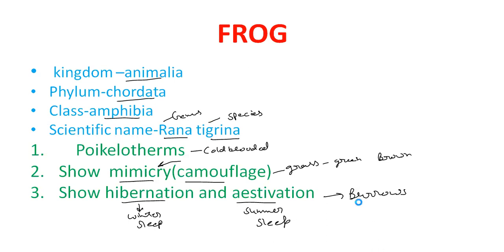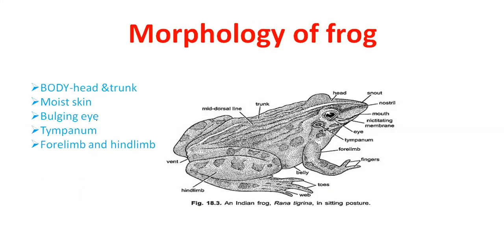Next is morphology. Frog body is divided into head and trunk. So here is the head and here is the trunk. Also, their skin is moist, smooth, and slippery because of the mucus, and their dorsal side of skin is olive green in color and the ventral side, belly side, is pale yellow in color.